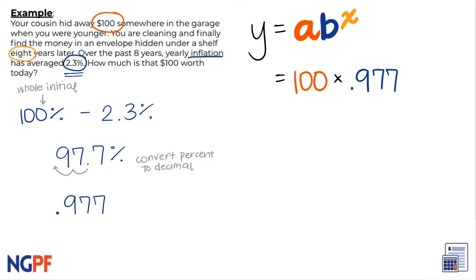The last variable to plug in is the exponent of x, which we know is 8 years. Now that we have accurately identified and substituted our variables into the formula, we can now use order of operations to calculate.